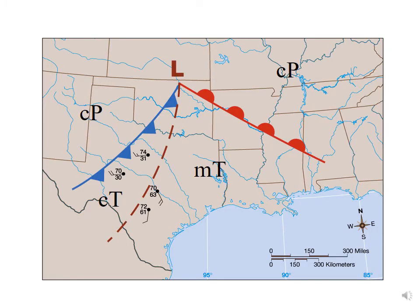Here we have a weather front with a low pressure system in southern Kansas. We have a warm front going off to the southeast and a cold front going off to the southwest — the warm front is the red one, the cold front is the blue one. We also have a dry line, which is the dashed tan line extending from the low pressure. The warm sector of the extratropical cyclone is the maritime tropical air mass between the surface warm front and the dry front. You'll very often have these tropical-type clouds that extend up into middle altitudes on this side of the extratropical cyclone.